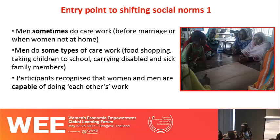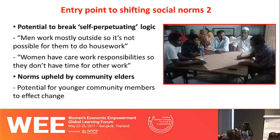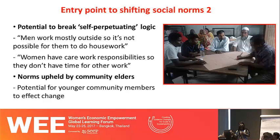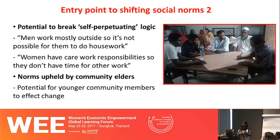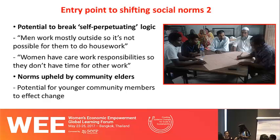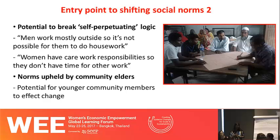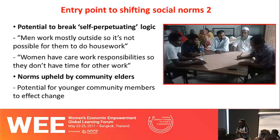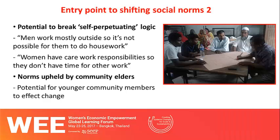We have an entry point to shifting social norms. There is a circular logic at play: men work outside so they can't work at home, and women work at home so they can't work outside. This is a logical cycle that needs to be broken. Importantly, younger community members are more willing to break this circular logic than older community members. For older people these are deeply ingrained norms, but for younger people they are more like social norms they follow because they see others do it — meaning they are more willing to change.